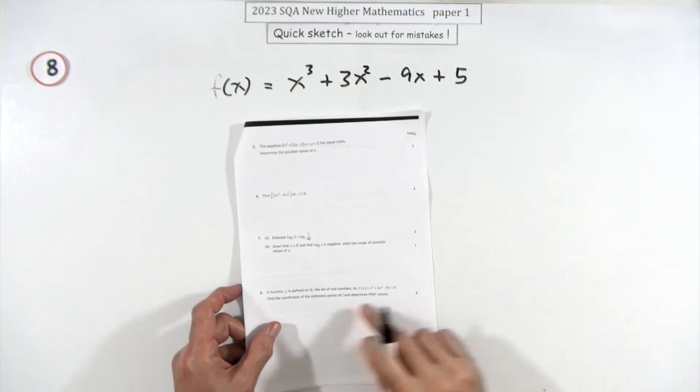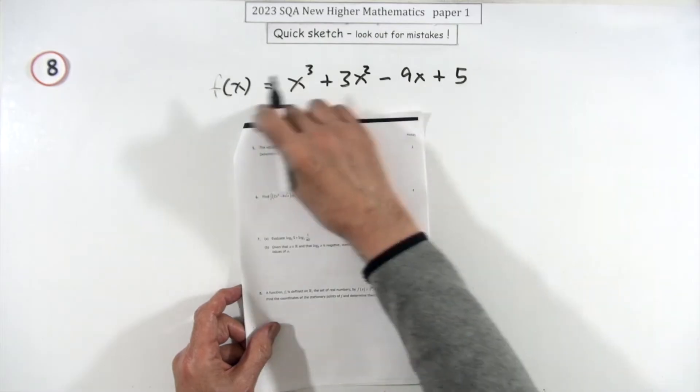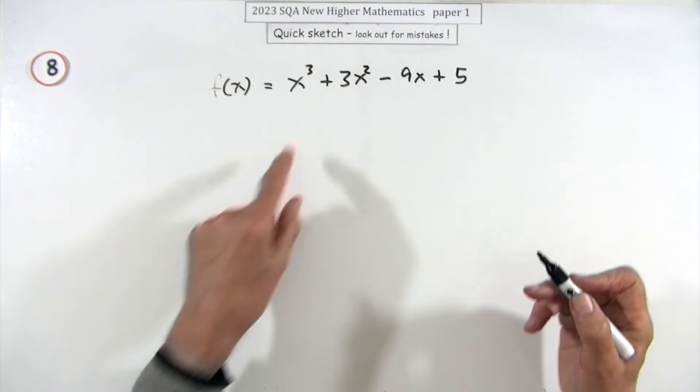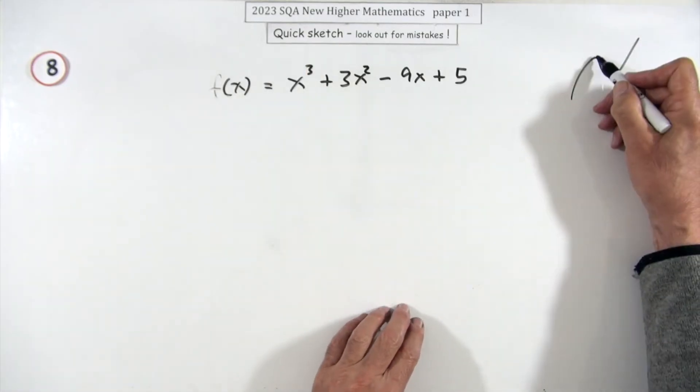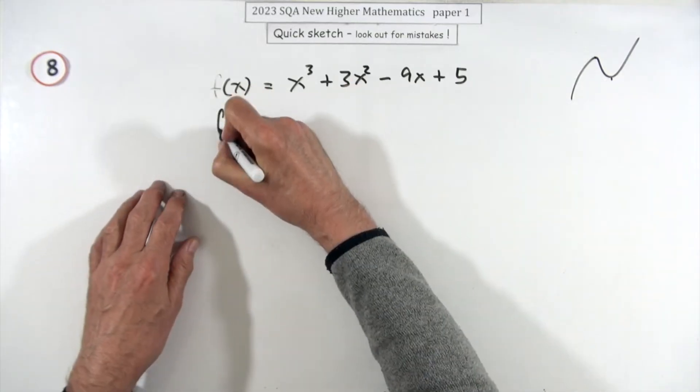Number eight, six marks: coordinates and nature of stationary points on the graph. You know what it looks like anyway - it's an x cubed graph, a positive x cubed, so it looks like this. You're gonna have a maximum first and then a minimum second, but you'll have to go through it all.